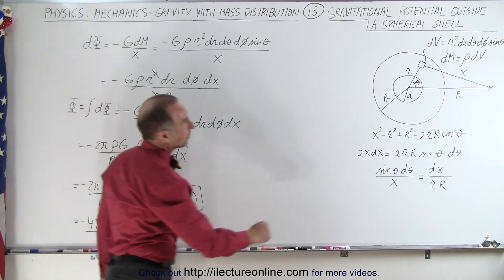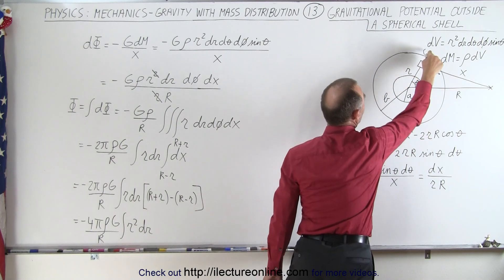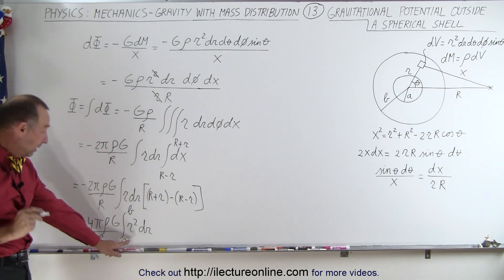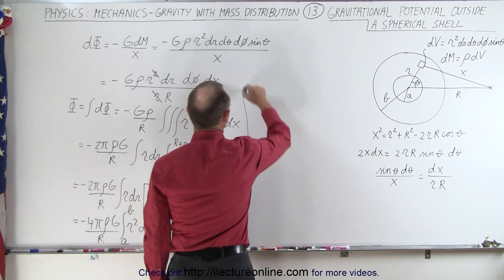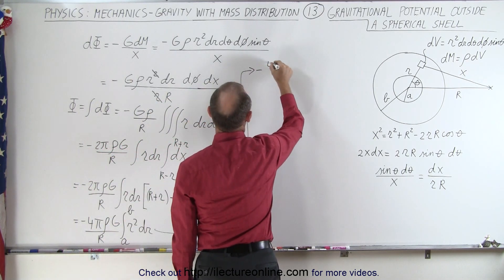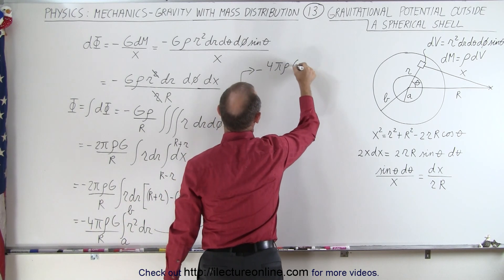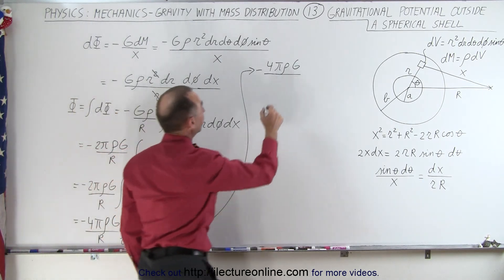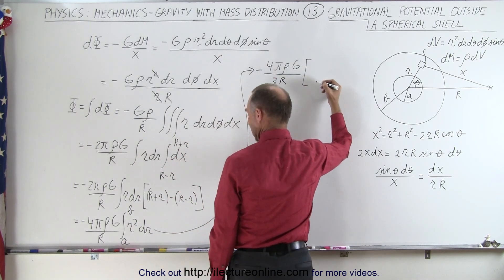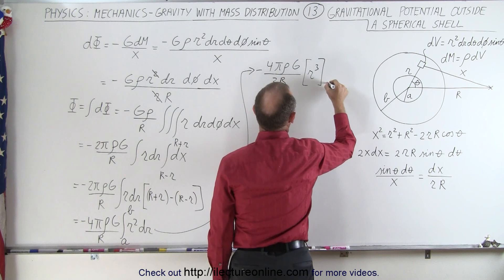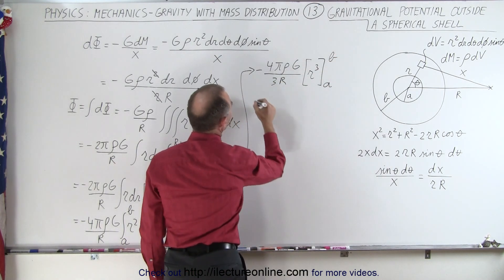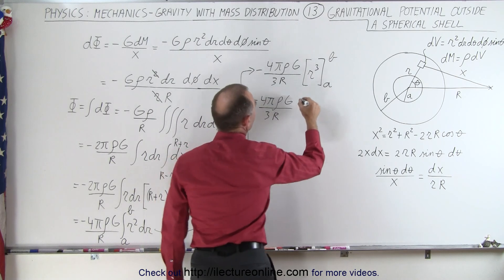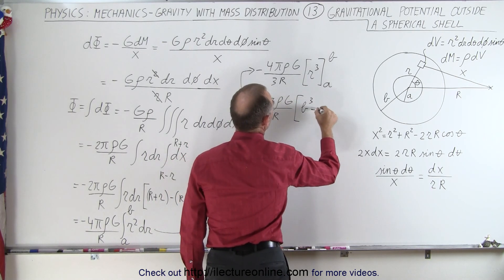This r² is integrated in the radial direction from the inner radius a to the outer radius b. Integrating r² dr gives r³/3, so the result becomes −4πρG / (3R) times (b³ − a³).